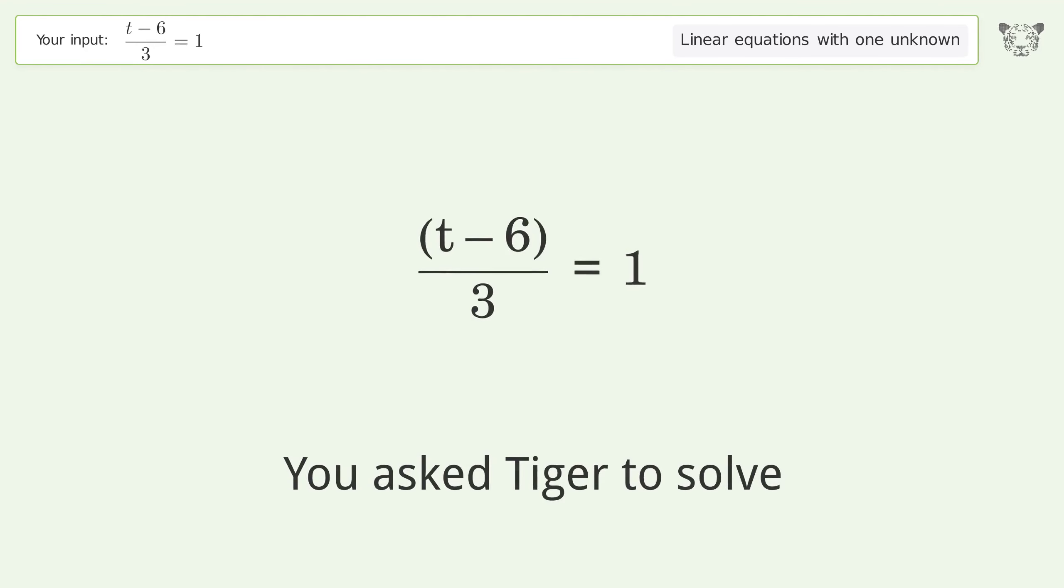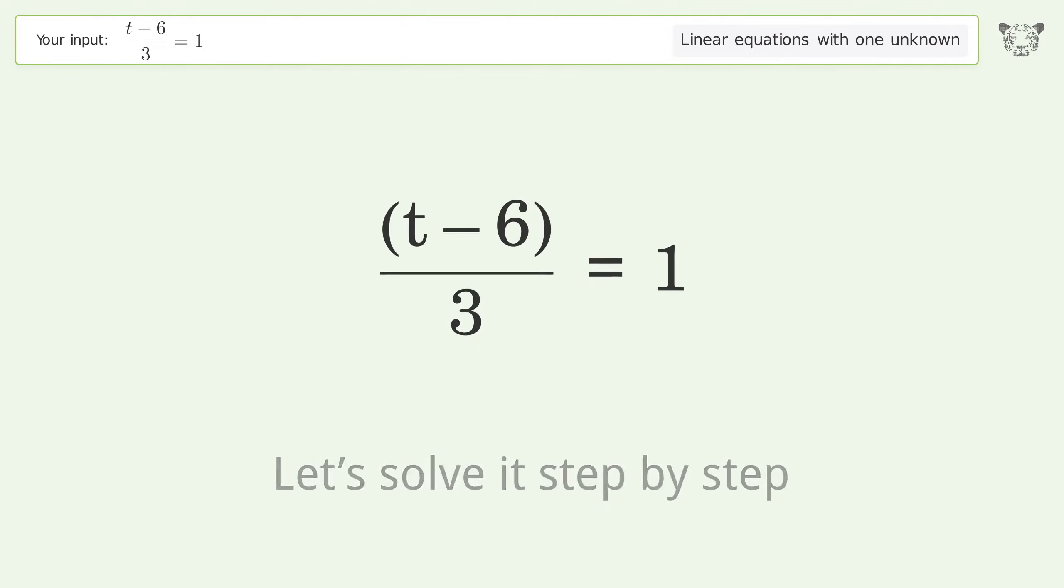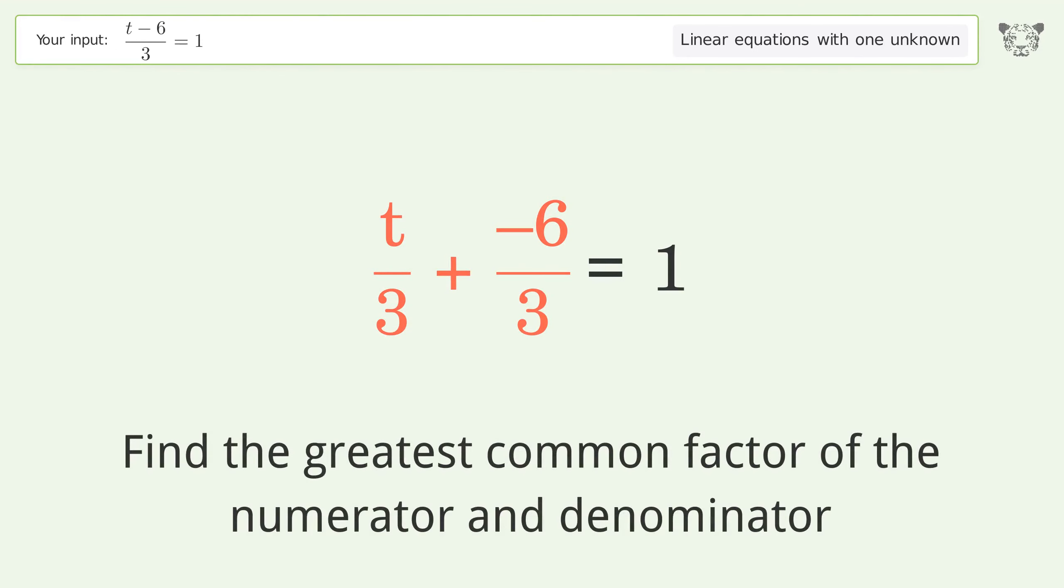You asked Tiger to solve this. This deals with linear equations with one unknown. The final result is t equals 9. Let's solve it step by step. Simplify the expression. Break up the fraction. Find the greatest common factor of the numerator and denominator.